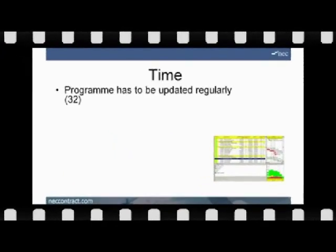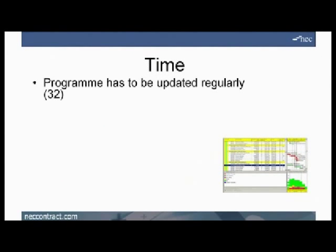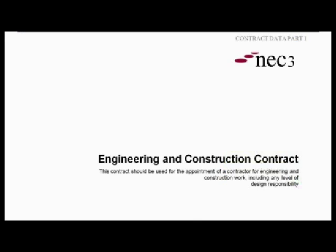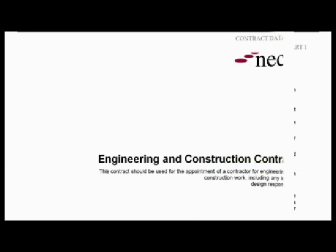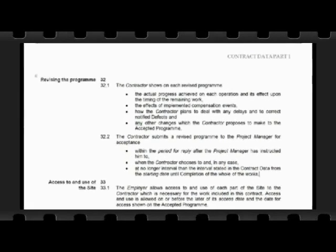Clause 32 deals with revising the programme. The contractor shows on each revised programme a number of things, including the actual progress achieved on each operation and its effects upon the timing of the remaining work.